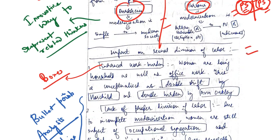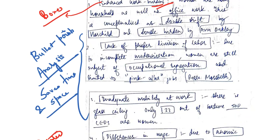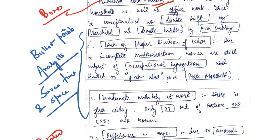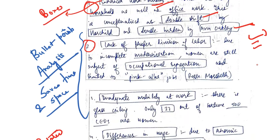The body part of the answer deals with the different aspects of the impact of modernization on sexual division of labor. They are covered in bullet format — point 1, point 2, etc. The related thinkers and their works are boxed; you can also underline them, that's not an issue.